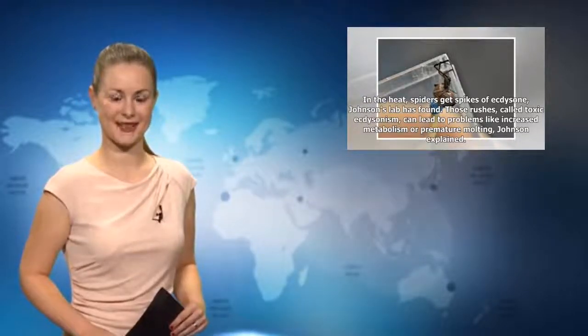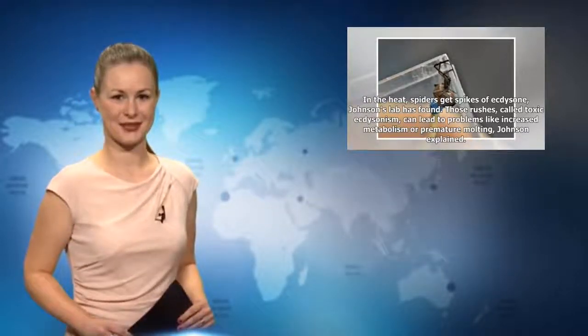A possible explanation has to do with the hormone ecdysone, which prepares arthropods like spiders, insects, and crustaceans to molt. In the heat, spiders get spikes of ecdysone, Johnson's lab has found. Those rushes, called toxic ecdysonism, can lead to problems like increased metabolism or premature molting, Johnson explained.